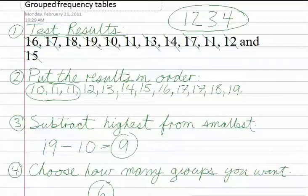I've broken down the process into seven steps, and the first step is to collect your information. In this case, we're talking about test results. So in step one, I've written down all the test results of the 12 children. Each child's mark is written down in step one.